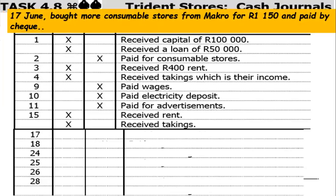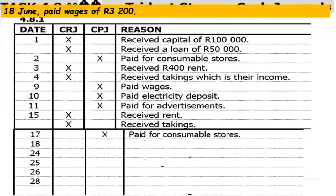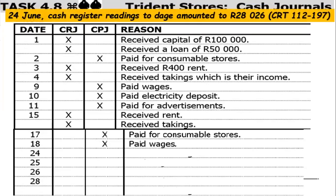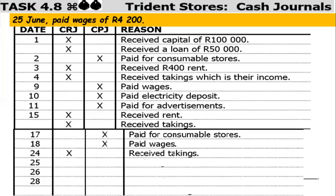On the 17th of June, they bought more consumable stores from Macro for 1,150 rands and paid by check — Cash Payment Journal. On the 18th of June, wages of 3,200 rands were paid — CPJ. On the 24th of June, cash register readings to date amounted to 28,026 rands — that is a receipt, so Cash Receipt Journal.